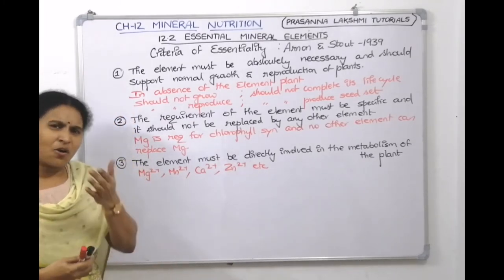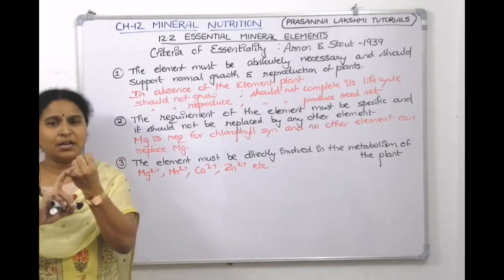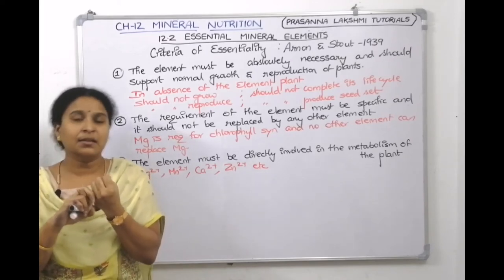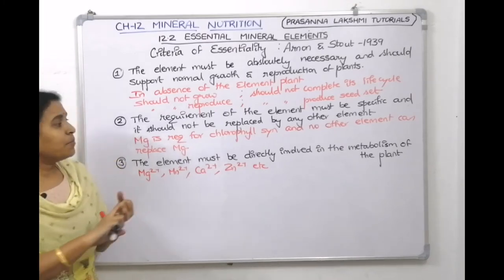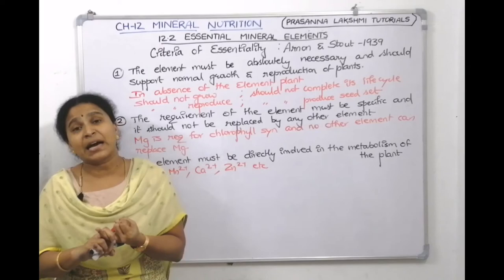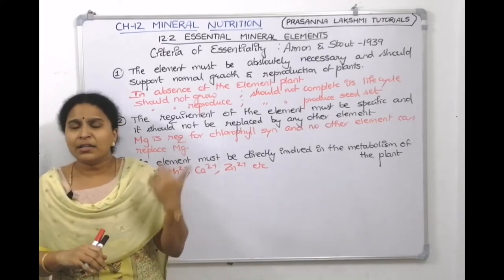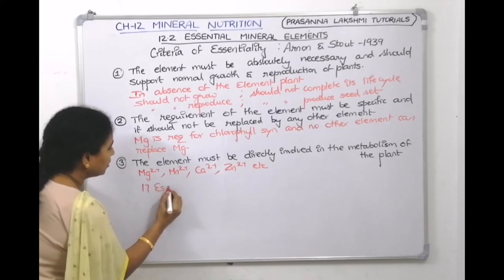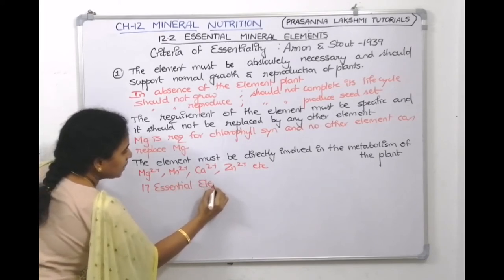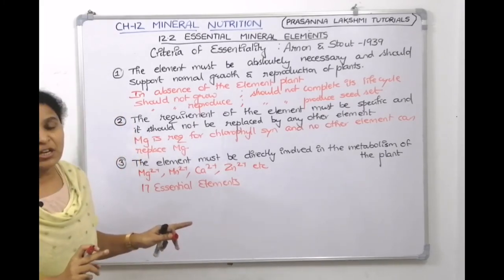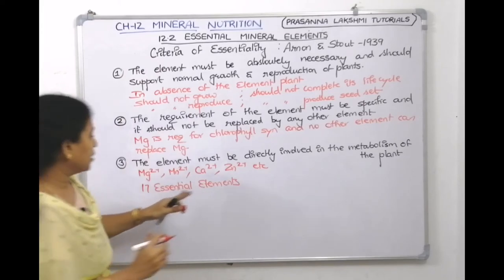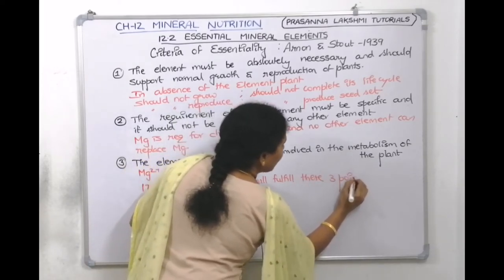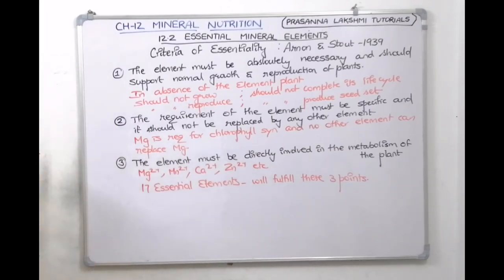To summarize the three criteria: all essential elements are necessary for growth and reproduction; all essential elements have specific functions whose roles cannot be replaced by any other element; and the element must be directly involved in metabolism. According to these criteria, there are 17 essential elements, and all 17 fulfill all three points — that is why they are called essential elements.